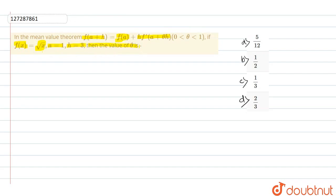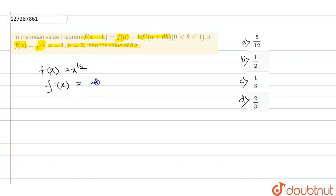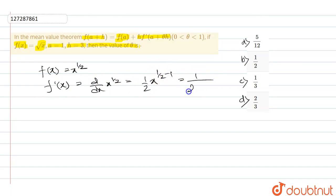Okay guys, first we will find f of x, which is x to the power of 1 by 2. Then f dash of x is d/dx of x to the power of 1 by 2. Using the power rule, x to the power of n gives n times x to the power of n minus 1, which means f dash of x equals 1 by 2 root over of x.